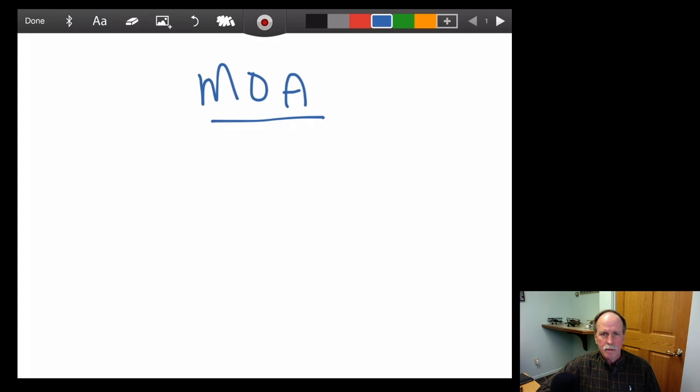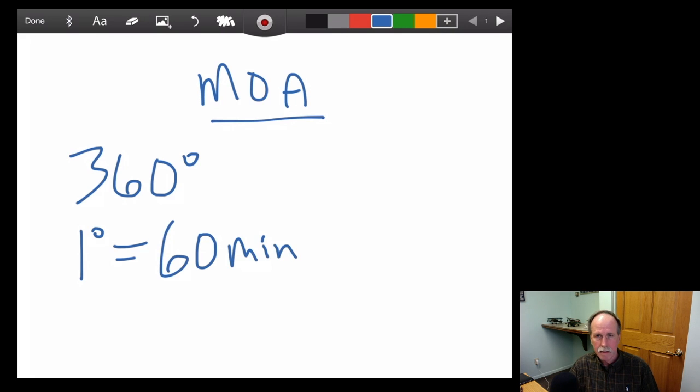Okay, so one of the first terms that a lot of people are confused about is something called minute of angle. Now if you look at a circle, that's 360 degrees. Each degree, one degree, equals 60 minutes, and then each minute equals 60 seconds of angle. Now here's how you calculate that when you're dealing with something like, say, shooting at a target. So we'll go ahead and do that.